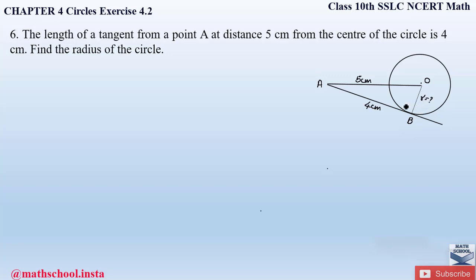We have to find the radius OB, knowing AO = 5 cm and AB = 4 cm. From Theorem 4.1, the tangent at any point of a circle is perpendicular to the radius through the point of contact. So this radius OB is perpendicular to the tangent AB at point B. We can observe that triangle AOB forms a right-angled triangle, and since we know two sides, we can find the third side by applying the Pythagoras theorem.